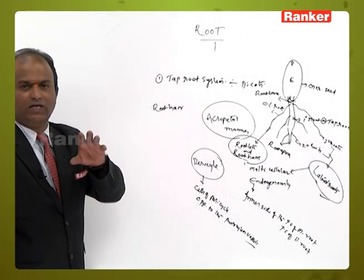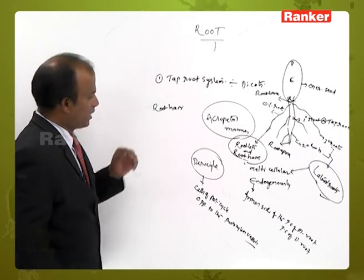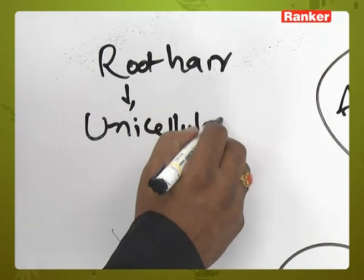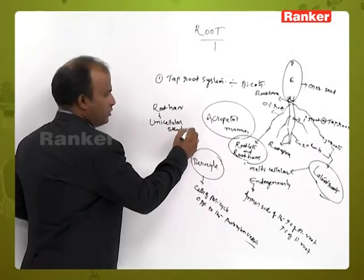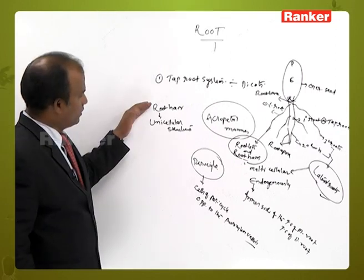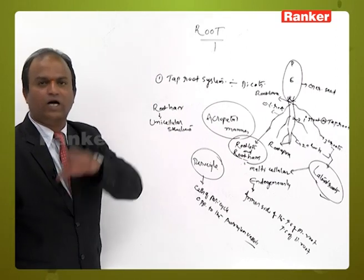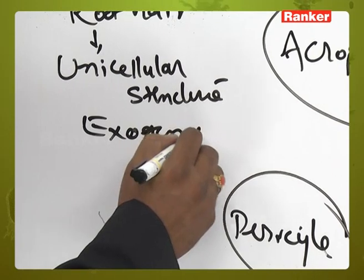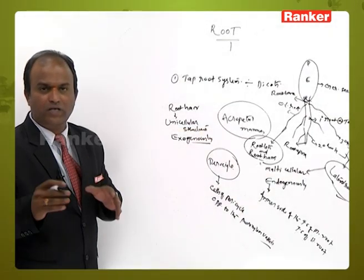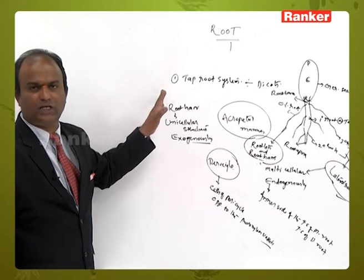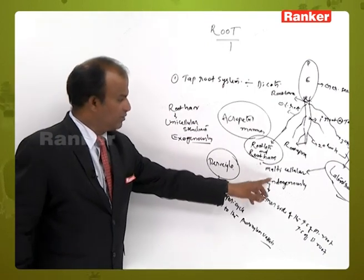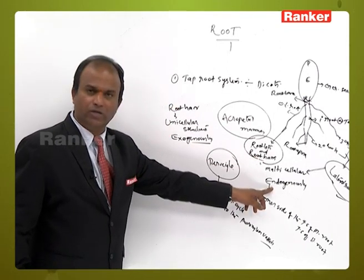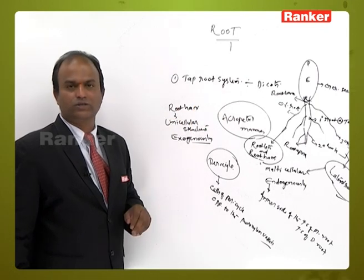Root hairs are a unicellular structure, unlike lateral roots which are multicellular. Root hairs develop exogenously. So the key difference: lateral roots are multicellular and develop endogenously, while root hairs are unicellular and develop exogenously.